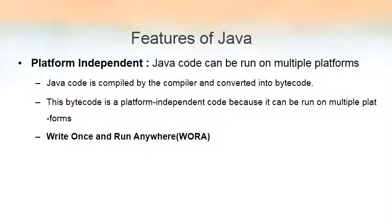The next feature is platform independent. The theme of Java is 'write once and run anywhere.' Once we write a Java program, it is possible to run that program irrespective of the operating system being used. Windows, Linux, Mac — all these are known as operating systems. If I write a Java program on a Windows system, the same program can be executed on Mac as well as Linux. That is known as platform independency.